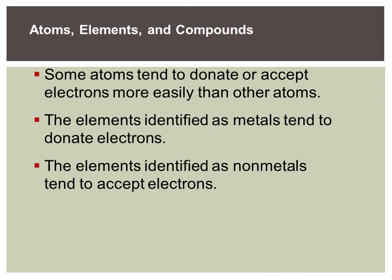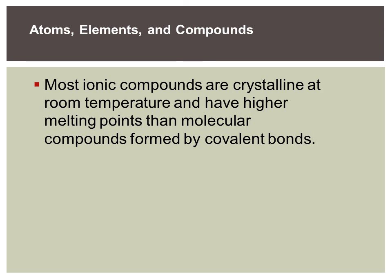Looking on page 149: some atoms tend to donate or accept electrons more easily than other atoms. The blue metals on your periodic table tend to donate electrons — they usually have one or two electrons on the outside, and it's easier to ditch those than to pull six or seven in. The elements identified as nonmetals (your yellow ones) tend to accept those electrons. Most ionic compounds are crystalline at room temperature and have a higher melting point — think salt crystals or sugar crystals.